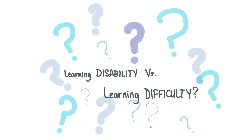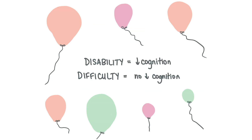Do you know the difference between a learning disability and a learning difficulty? A learning difficulty does not affect general intelligence whereas a learning disability is linked to an overall cognitive impairment. Some examples of specific learning difficulties are dyspraxia and dyslexia.